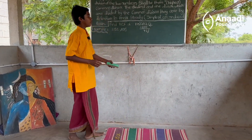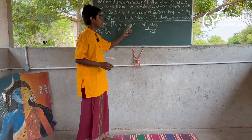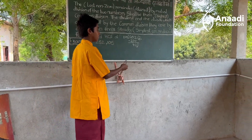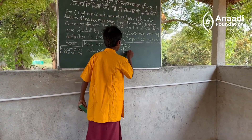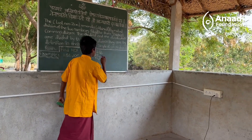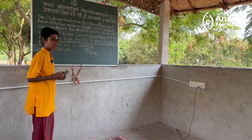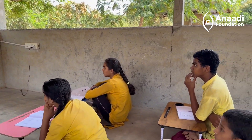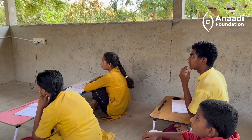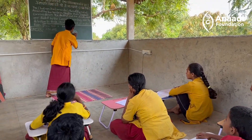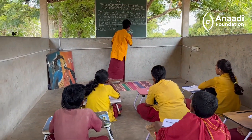Now we divide the previous divisor by the current remainder. So, 105 divided by 42 — how many times does 42 come in 105? 2 times, giving 84. This leaves us a remainder of 21.